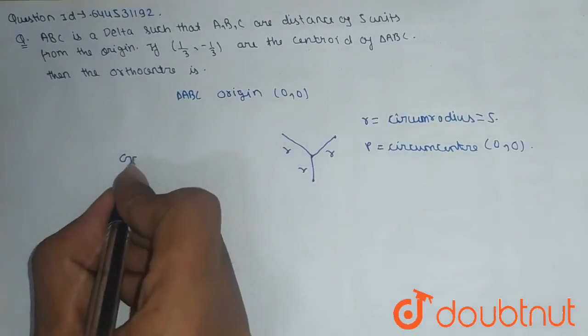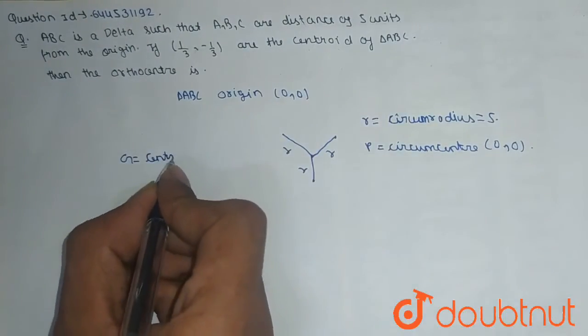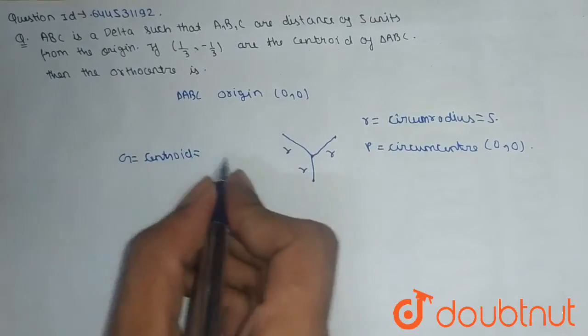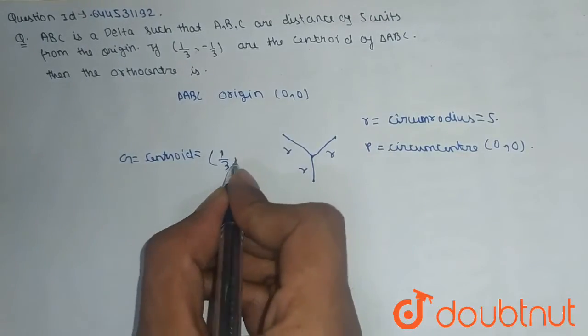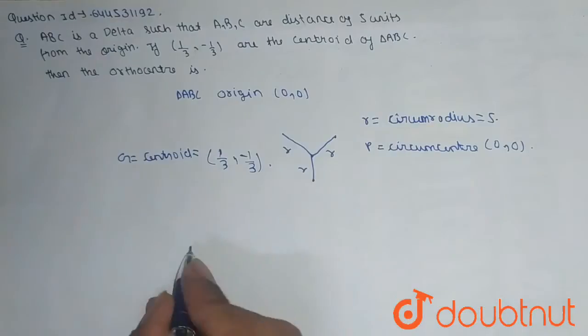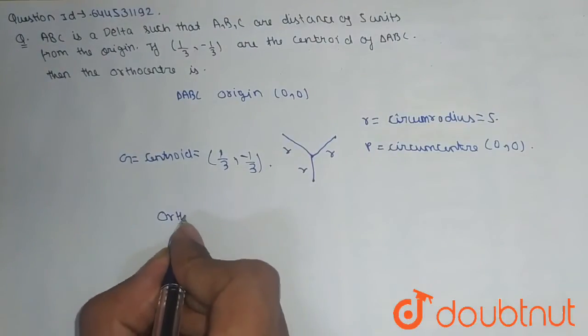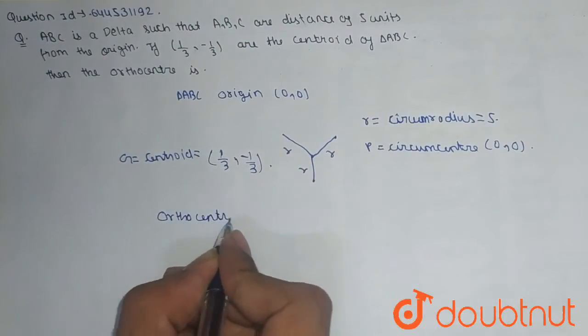We have G equal to centroid, which is equal to (1/3, -1/3). And we have to suppose orthocenter H.